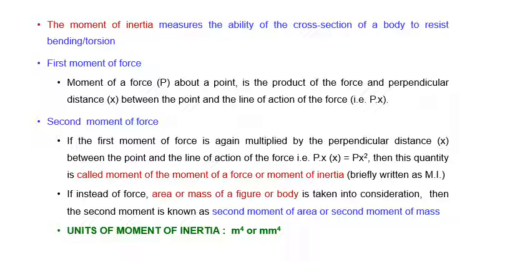In the last lectures we have seen how to get the moment of a force about a point. Moment of a force about a point is the product of the force and the perpendicular distance between the point and the line of action of the force. If the force is P and the perpendicular distance is X, then the moment is P into X. If this first moment is multiplied again by the perpendicular distance X, giving PX squared, that quantity is called the moment of the moment of the force, or moment of inertia.